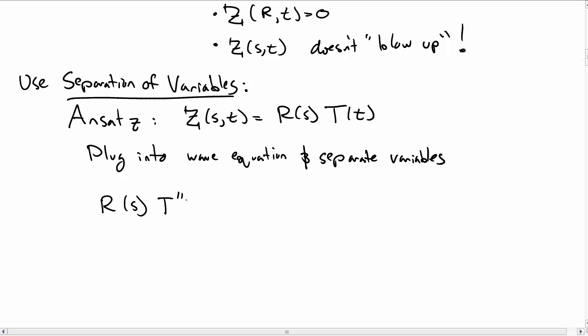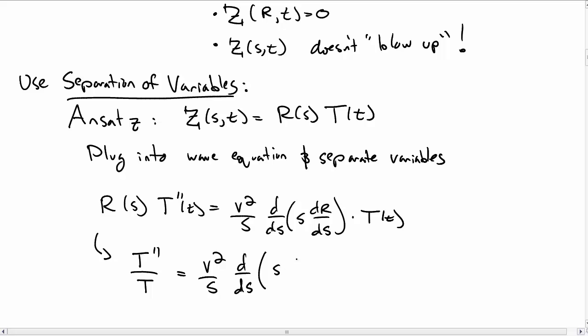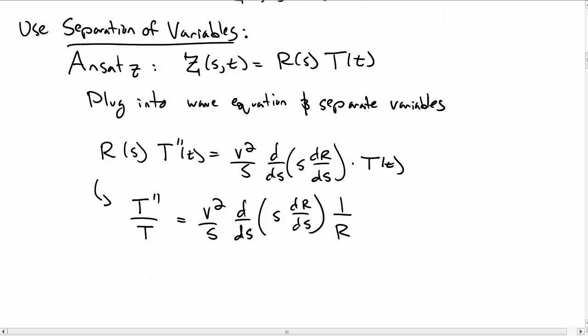We put that into our wave equation and we get a second derivative with respect to time on the left-hand side. Then the r ends up inside this derivative on the right-hand side times t. If you divide by r times t, you get the classically separated equation where it's only t on the left and only things that depend on s on the right.